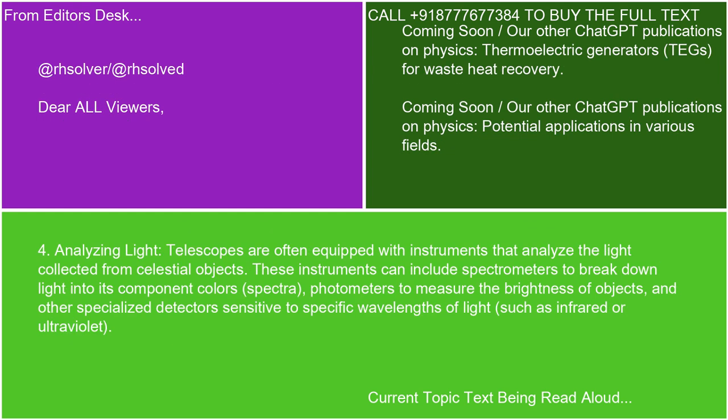4. Analyzing light. Telescopes are often equipped with instruments that analyze the light collected from celestial objects. These instruments can include spectrometers to break down light into its component colors (spectra), photometers to measure the brightness of objects, and other specialized detectors sensitive to specific wavelengths of light, such as infrared or ultraviolet.